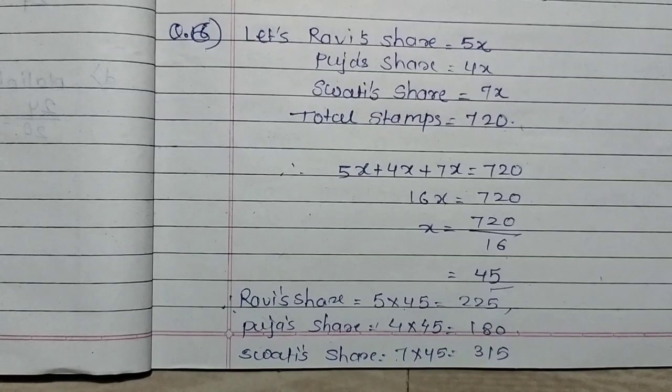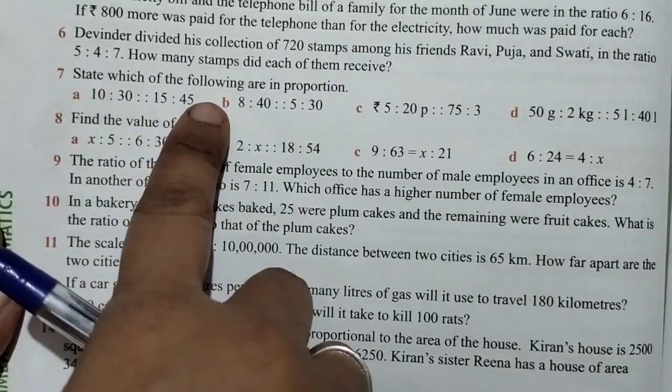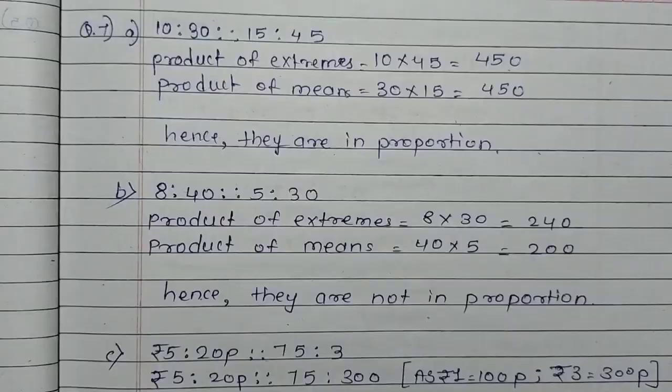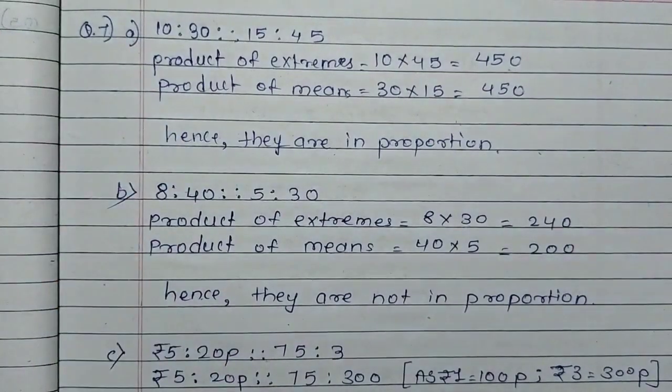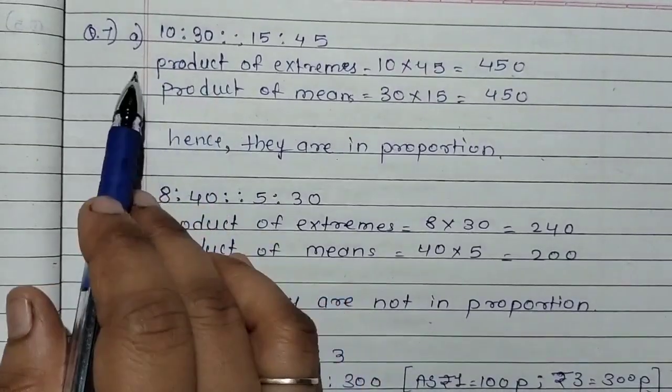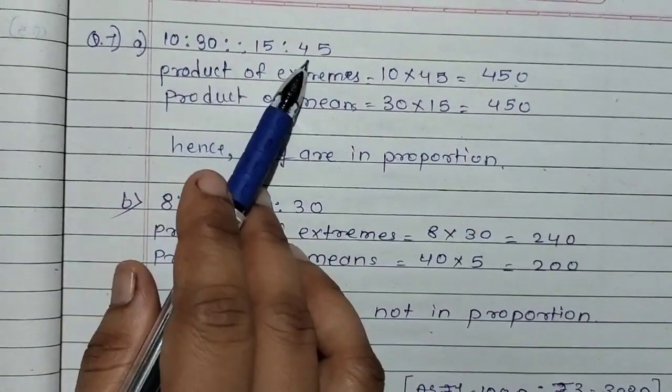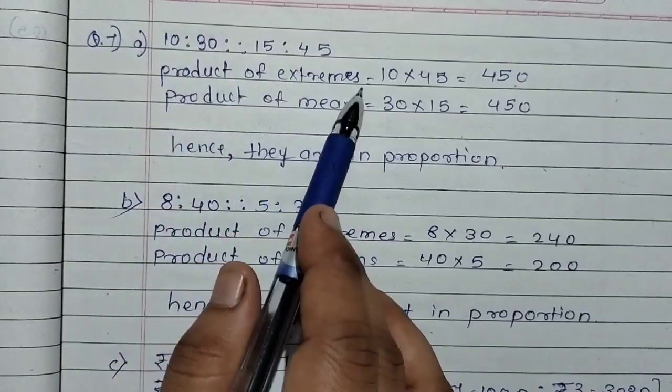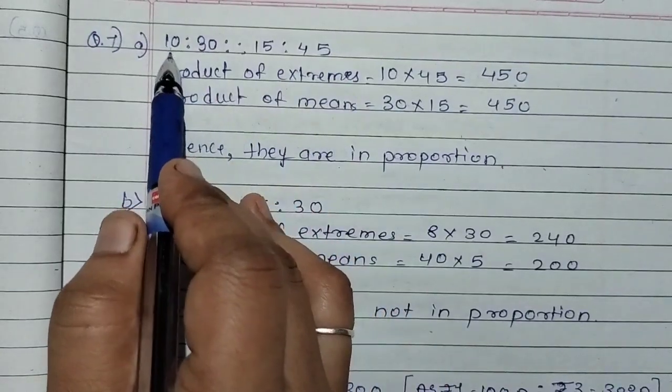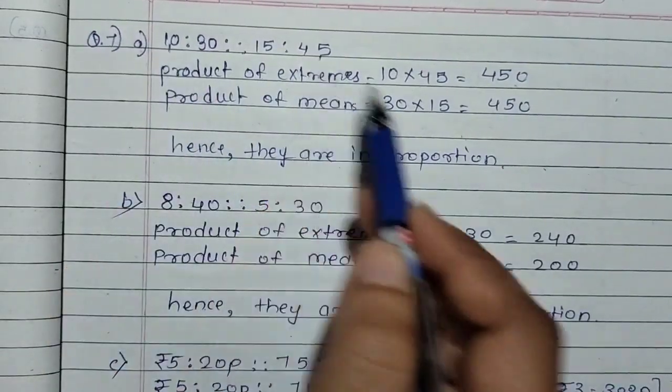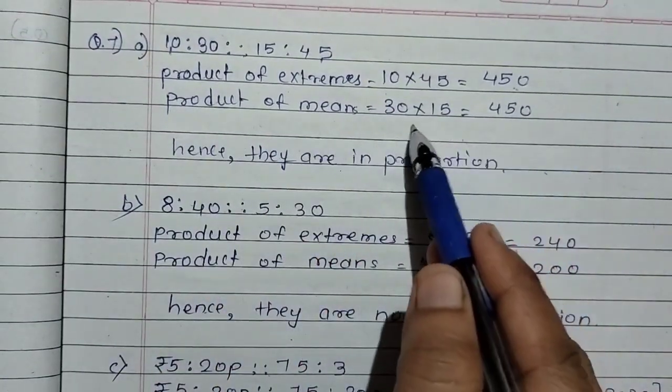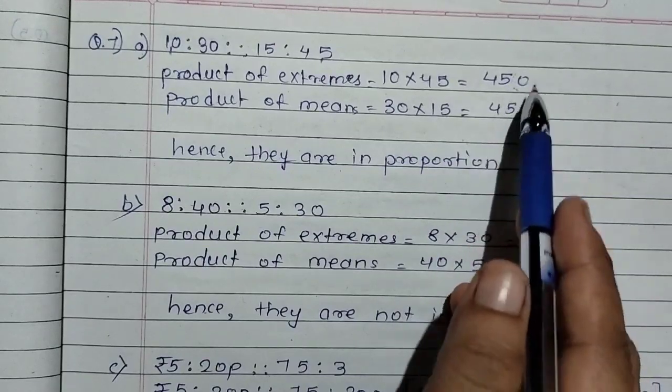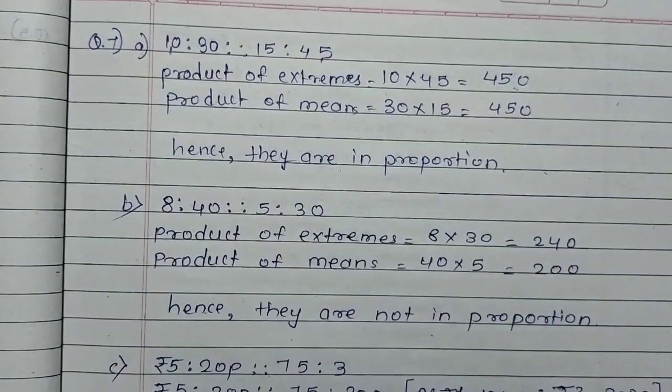Next question number 7: State which of the following are in proportion. We have solved these questions in exercise 10B. I have shown two methods here. I will show you one method. This is a very easy method. What do we need to do? Check if they're in proportion or not. First, we will do product of extremes. Product of extremes means first number and last number. 10 into 45 equals 450. And product of means is 30 into 15 equals 450. So both are the same, hence they are in proportion.